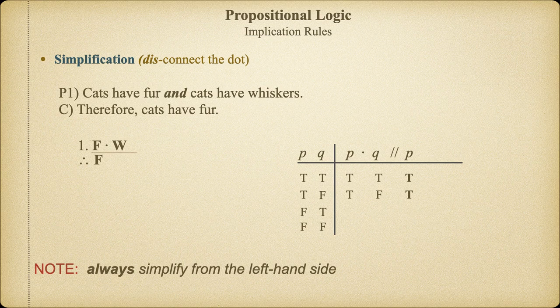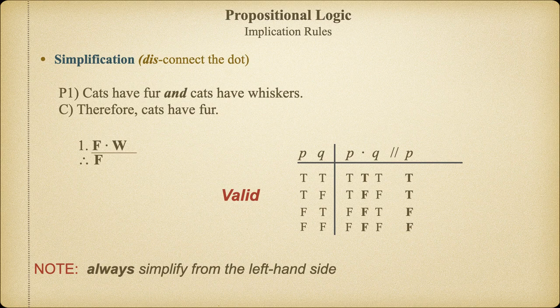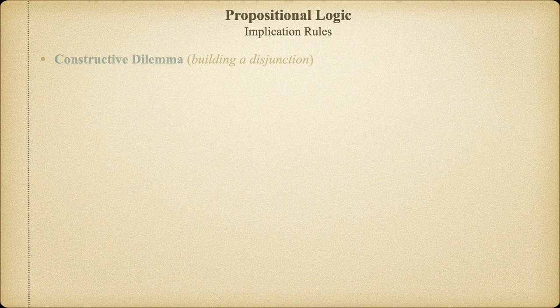As always, we can quickly demonstrate the validity of this simple argument by setting up a truth table. We see that there are no cases where the premise is true and the conclusion is false, so we know that this rule of deductive inference is also going to be valid.